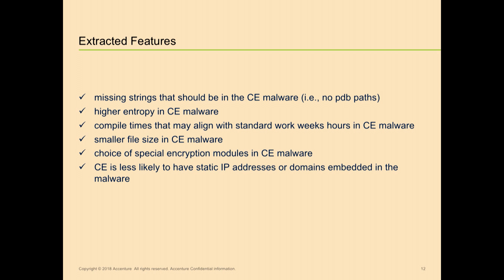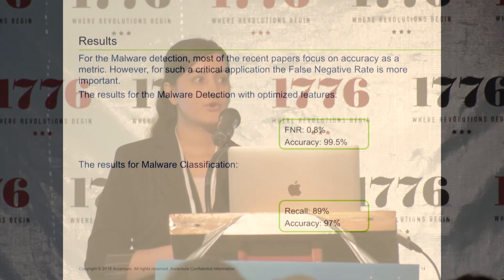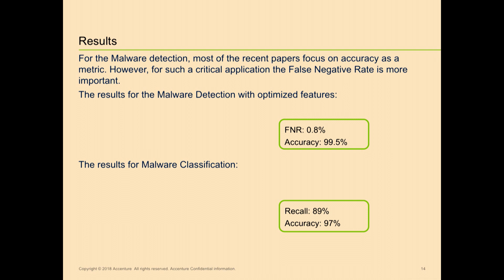Using these features, we created this classification model. For the detection problem, we had 20K malwares and 15K goodwares in our dataset. For the classification, we had 8K cyber crime and 6K cyber espionage samples — these are vetted cyber crime and cyber espionage malwares we have in our database. As a company providing such services, false negative rate is the most important metric, so we optimized our model considering false negative rate. We achieved over 99% accuracy in detection and over 97% accuracy in the classification problem.